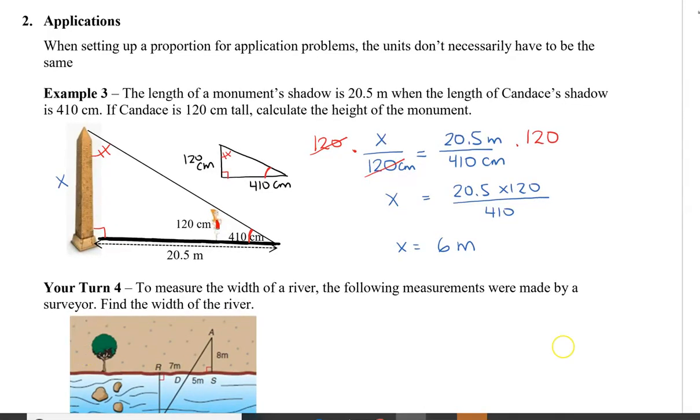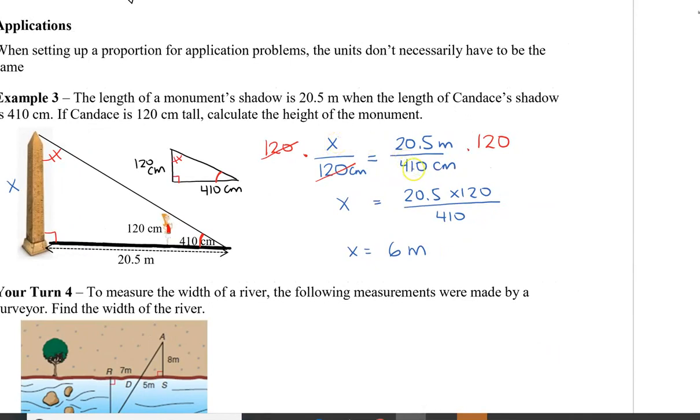Now the other thing that you could have done, if you like cross-multiplying, is to take x times 410, so it's going to be 410x, and that will equal in the other direction multiplied, which is 120 times 20.5. And then we're going to divide both sides by 410. And you notice you actually get the same expression over here. So x still equals this. So in this case, because x is in the numerator, it's actually easier just to multiply by the denominator on both sides. The denominators will cancel off, and then you'll have x all isolated ready, and you just have to then calculate the expression on the right side. And that's how you use similar triangles to solve a problem.